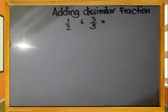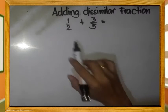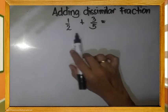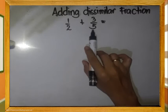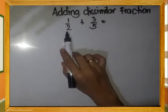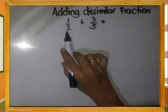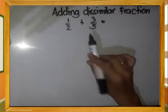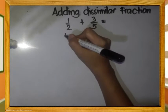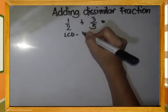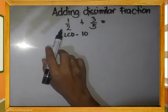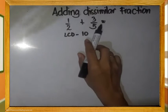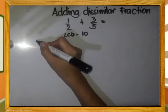Adding dissimilar fractions. Since these are dissimilar fractions, we will first make them similar by using the LCD. What is the LCD of 1 half and 3 fifths? The LCD is 10. Let us rename 1 half and 3 fifths first.